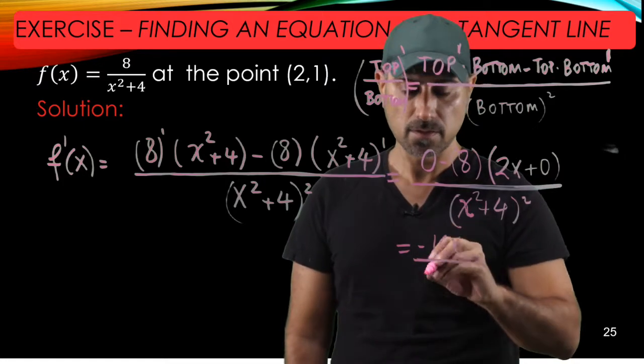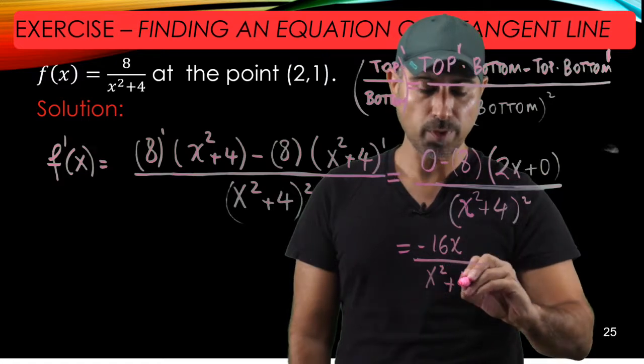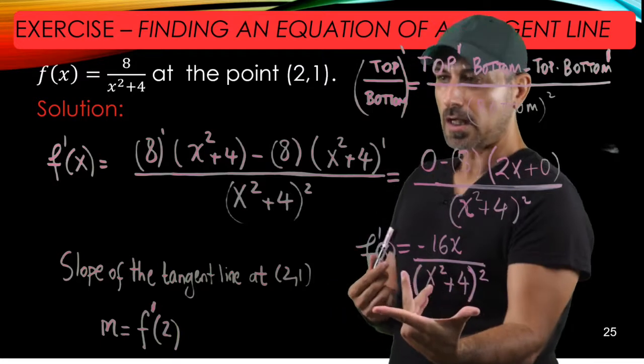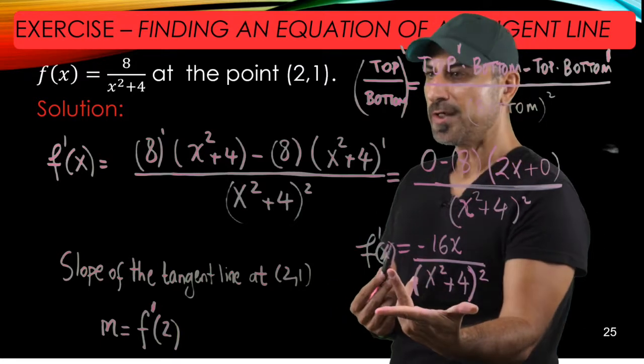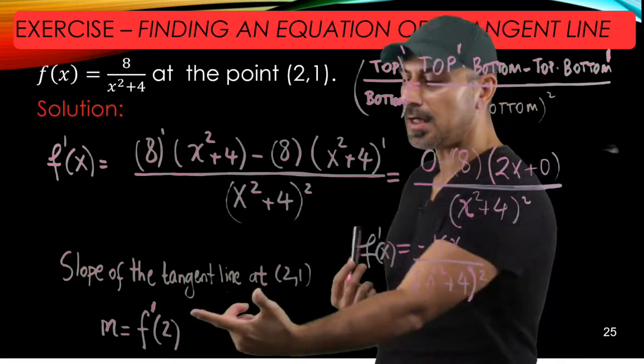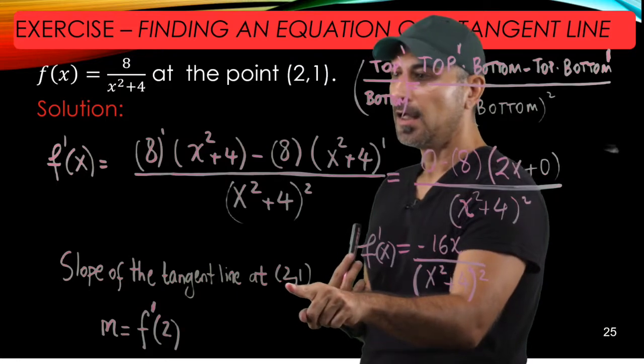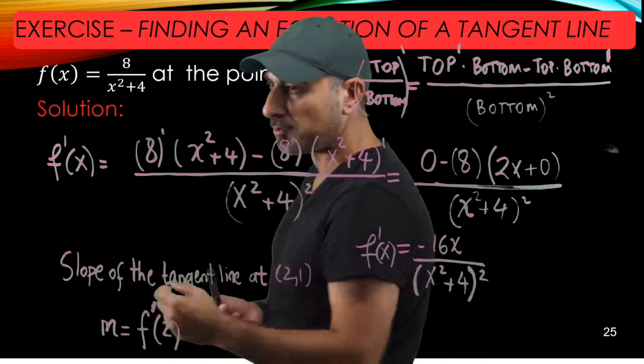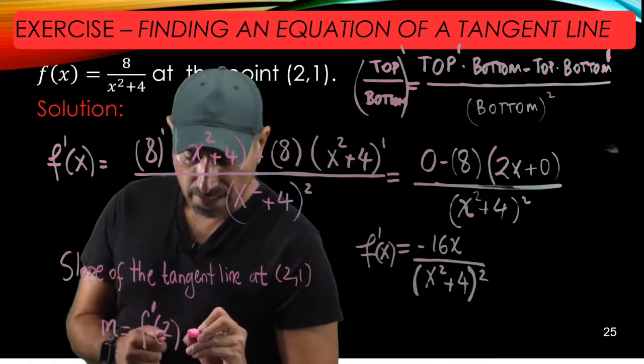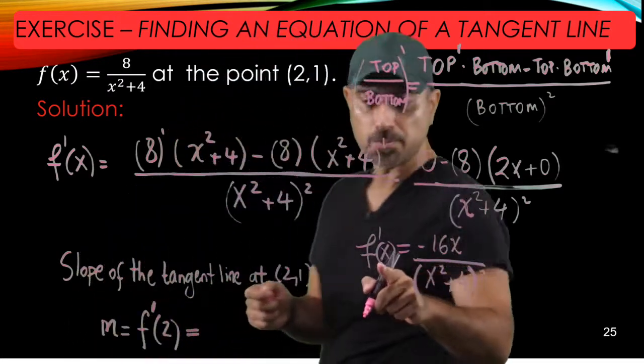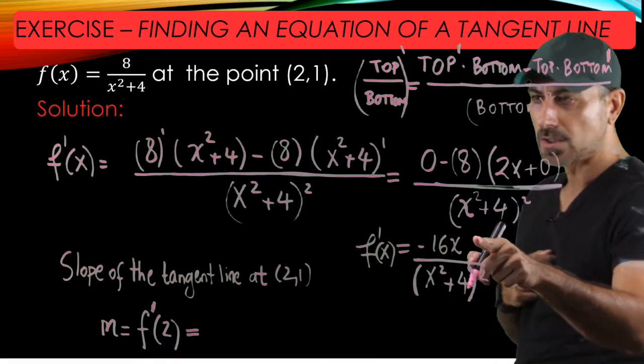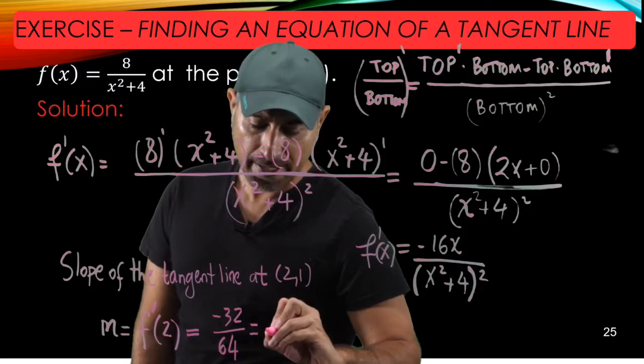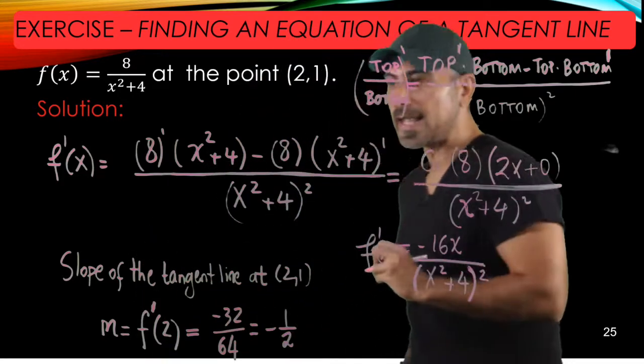We need the slope of the tangent line by using the derivative we just came up with. We know that f' evaluated at the given point (2,1) provides us the slope of the tangent line. So what is f'(2)? We're going to replace x by 2 here, so it's going to be -16(2)/(2²+4)² = -32/64, and if we simplify that, the slope of the tangent line is -1/2.